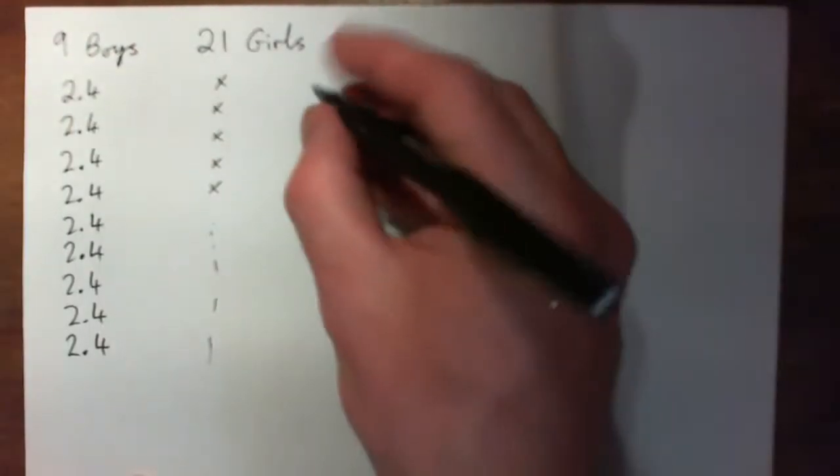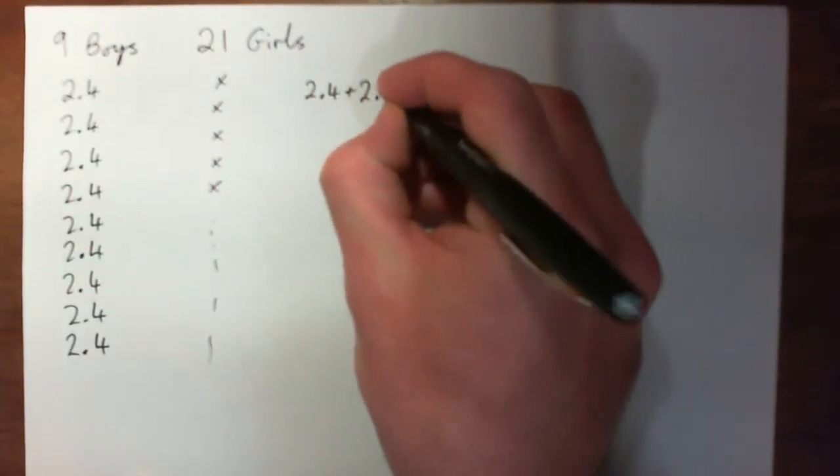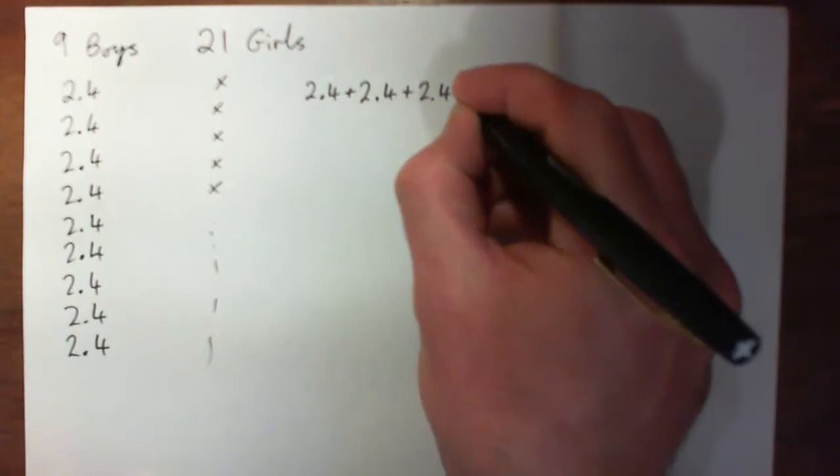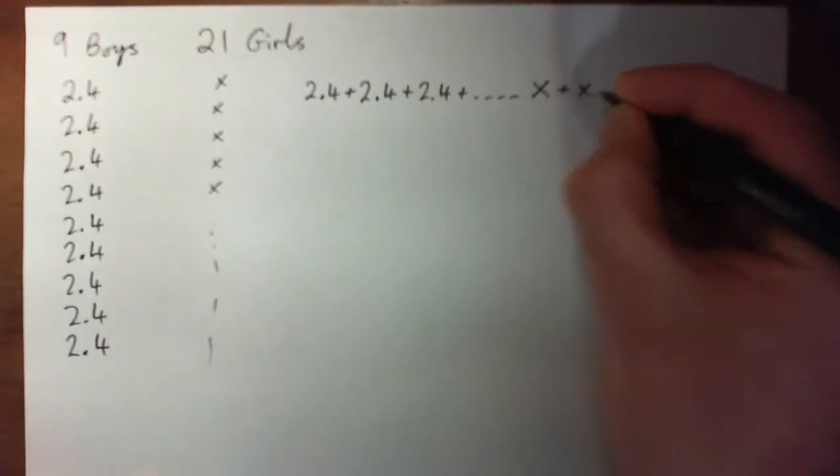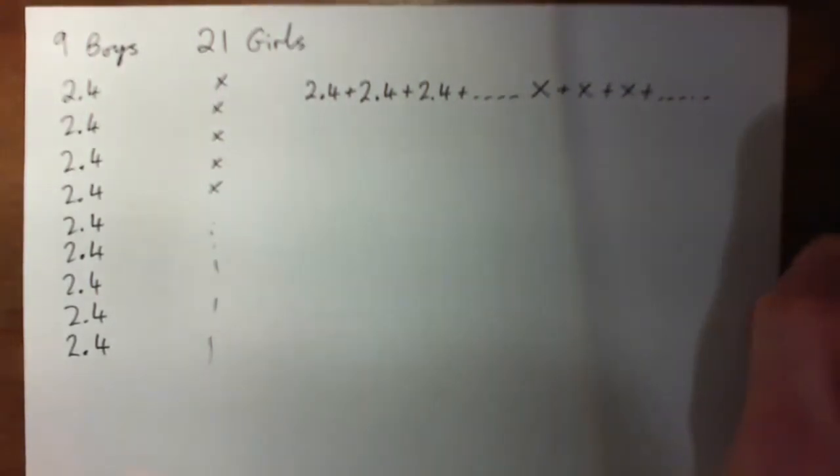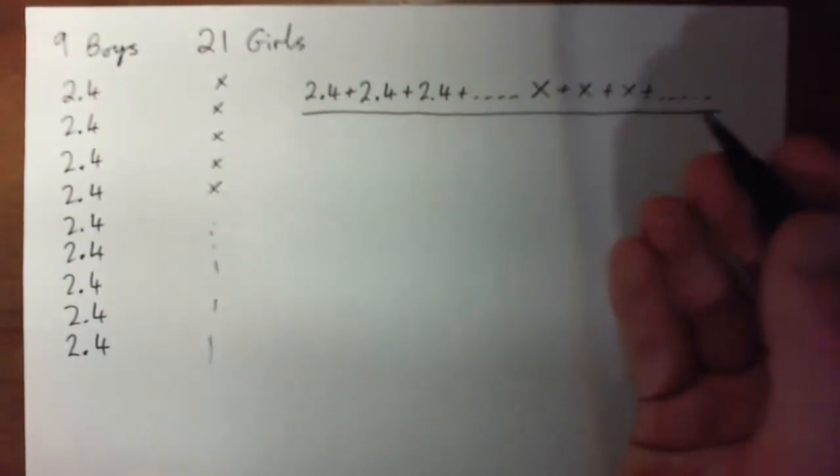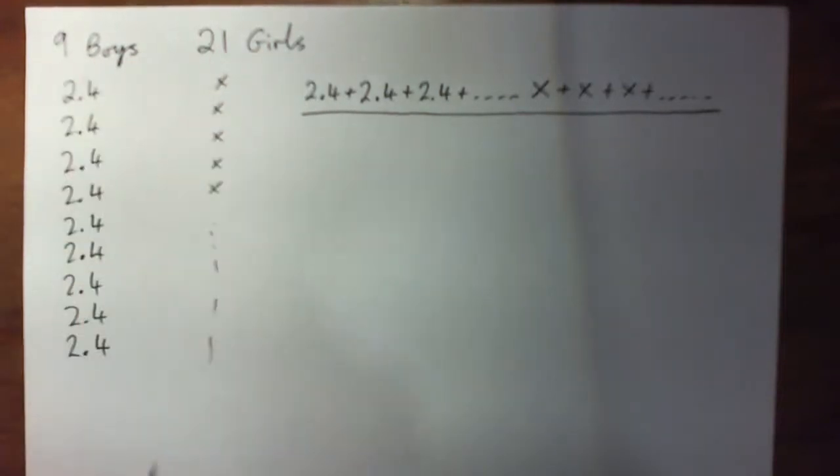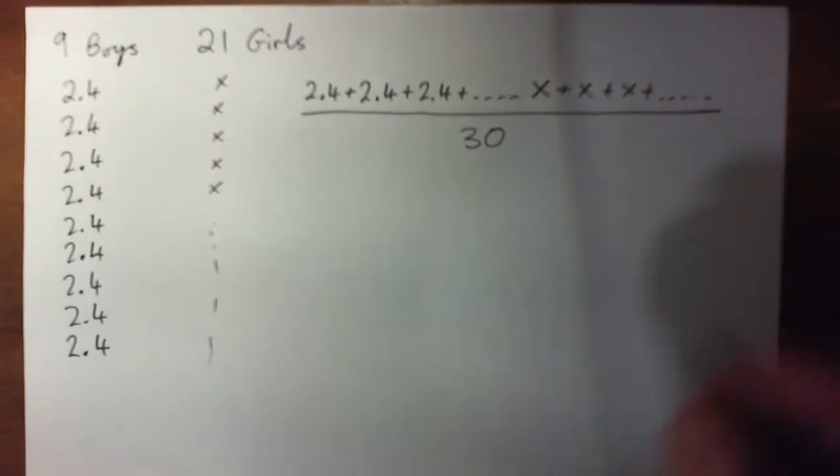So basically what we would do if we were getting the mean of the whole class is we would take all these 2.4s and add them together, nine of them, and then we would take all the girls' scores, let's say they're all X, and we add them together.